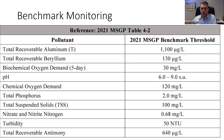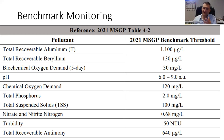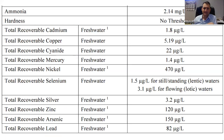The benchmark monitoring parameters used to be just three or four things, but now there's a whole list. These two slides show the full list of parameters you monitor for each quarter during year one and year four. These are freshwater parameters — if you work on the coast, consult the permit for different saltwater thresholds.